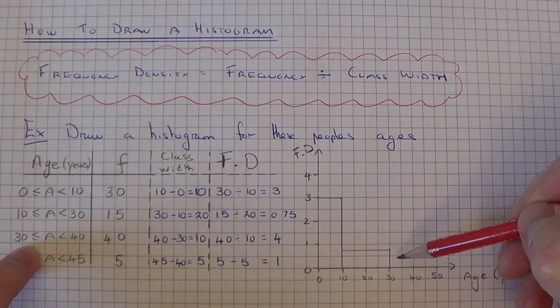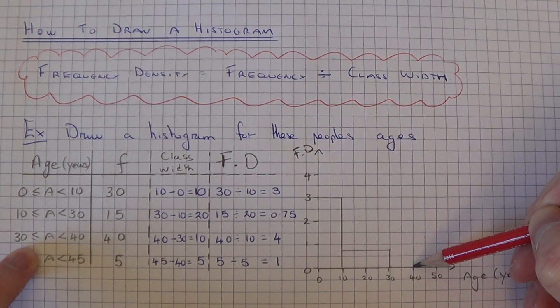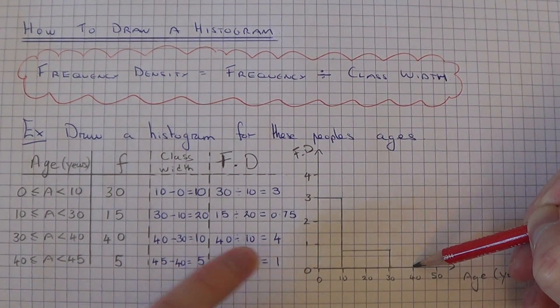For our third group, which went from 30 to 40, our frequency density was 4.